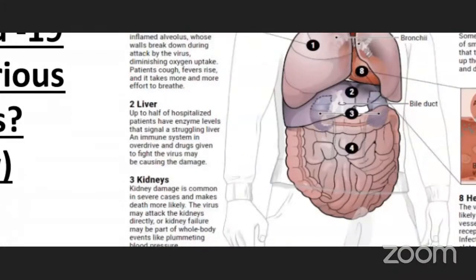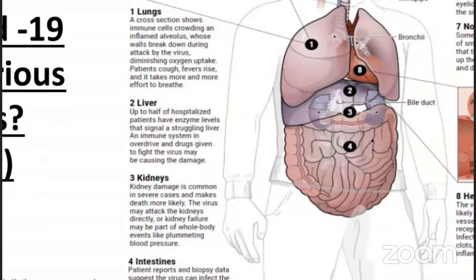Second, the liver. Up to half of hospitalized patients have enzyme levels that signal a struggling liver. An immune system in overdrive and drugs given to fight the virus may be causing the damage.